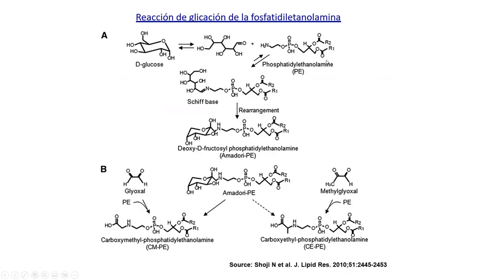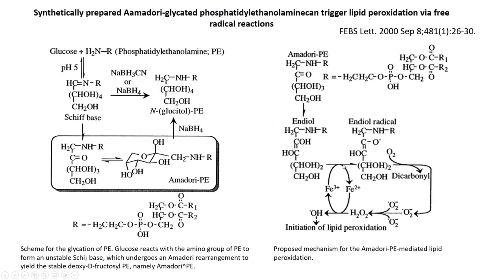The phosphatidylethanolamine components of biological membranes — a phospholipid that has an amine group — are able to react with glucose to generate a Schiff base and Amadori phosphatidylethanolamine products. From this Amadori phosphatidylethanolamine product, it is also possible to produce dicarbonyl compounds. The Fenton reaction could generate hydroxyl radicals that are able to initiate lipid peroxidation and other oxidative reactions.